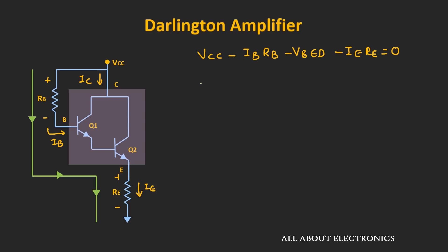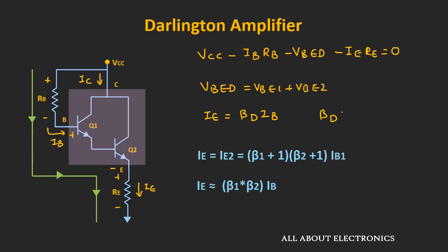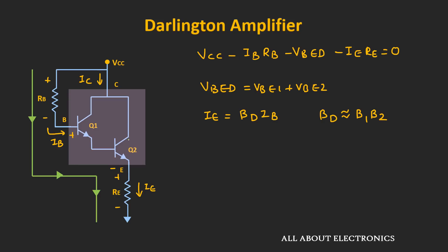This IE is the voltage drop across the emitter resistor. Here, this voltage VbeD is the voltage drop across the base and the emitter of this Darlington pair, which is equal to Vbe1 plus Vbe2. And this emitter current is equal to βd times Ib, where βd is approximately equal to β1 times β2.